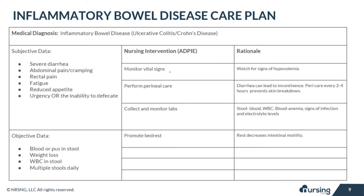For your patient with inflammatory bowel disease, promote bed rest because rest decreases intestinal motility to help slow things down and decrease diarrhea. If the patient has frequent urges to defecate or is experiencing incontinence, provide a commode at the bedside to help them and also reduce the risk of falls.